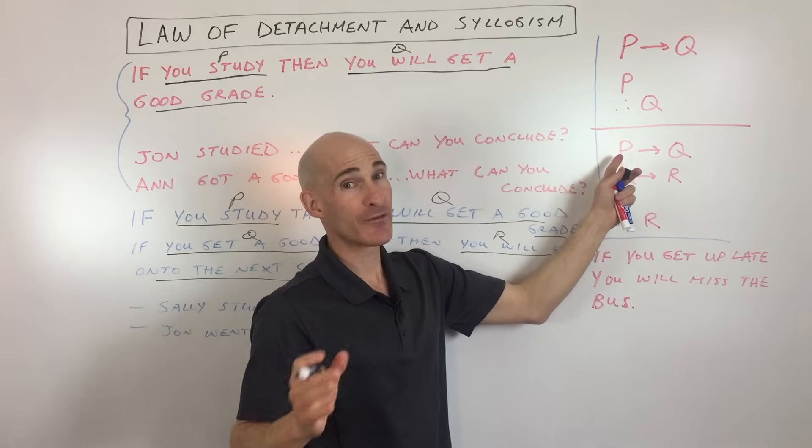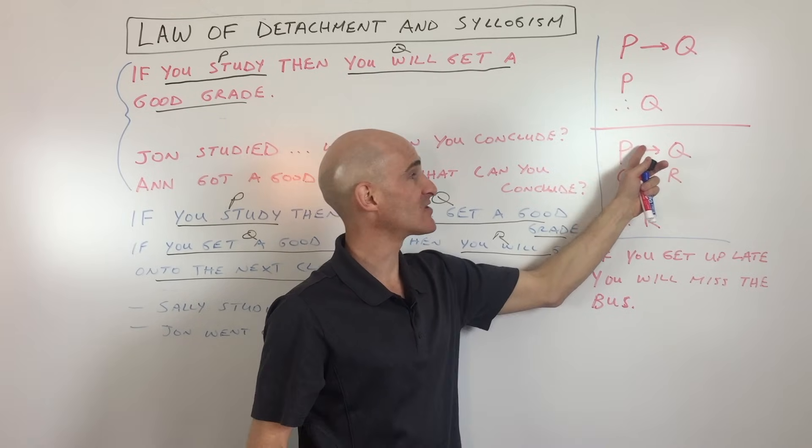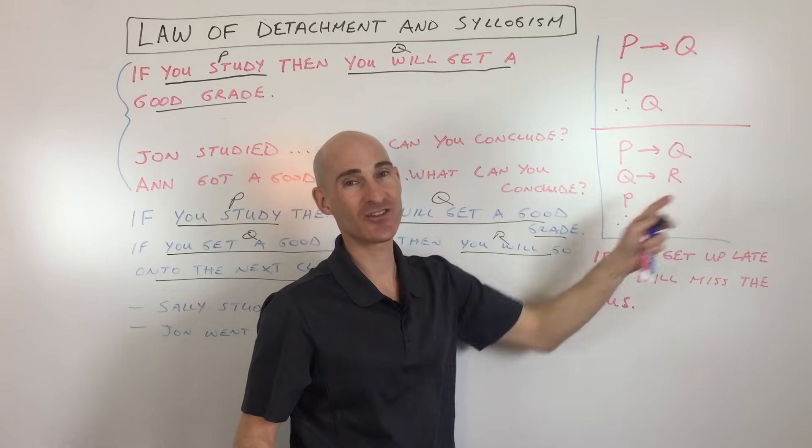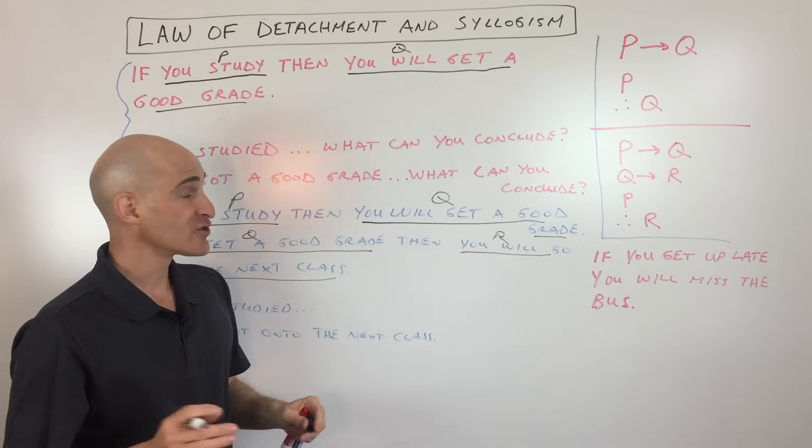The only thing we can conclude for certain, for 100%, is that it's going this direction, the direction of the arrow. Let's look at one last example.